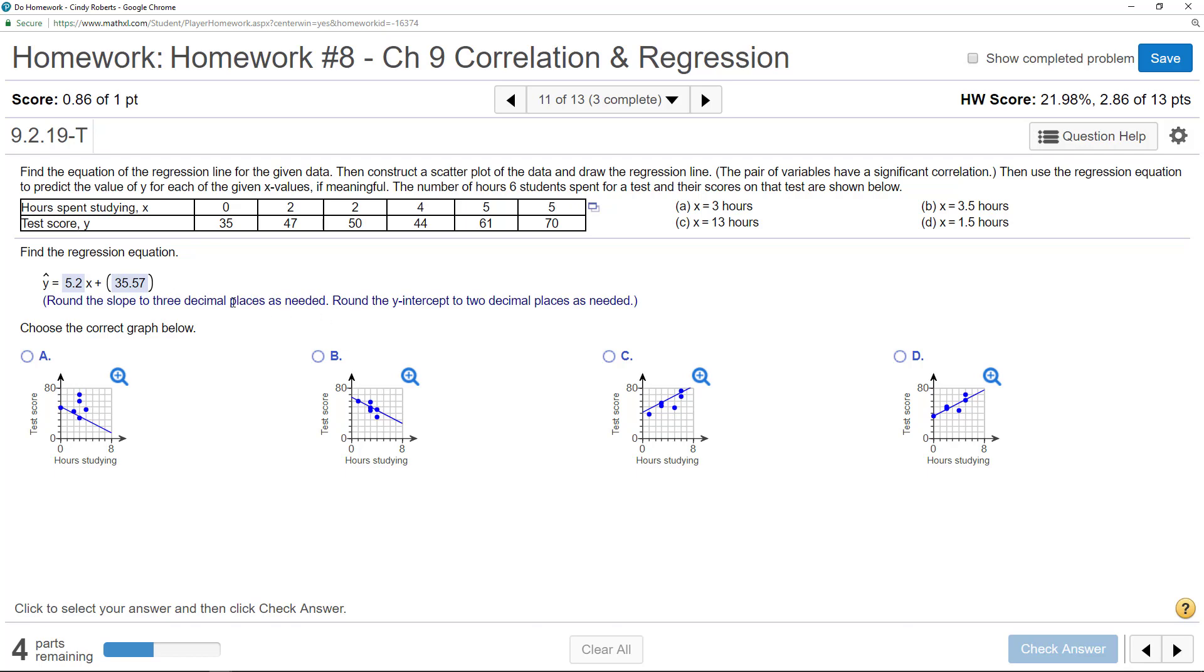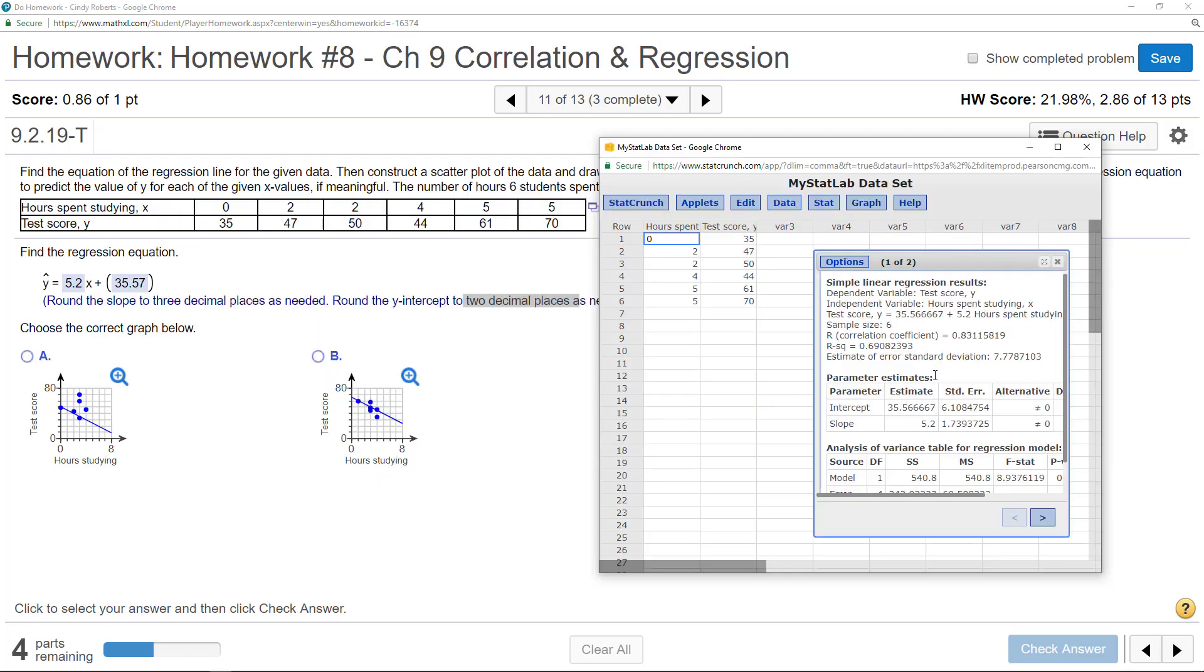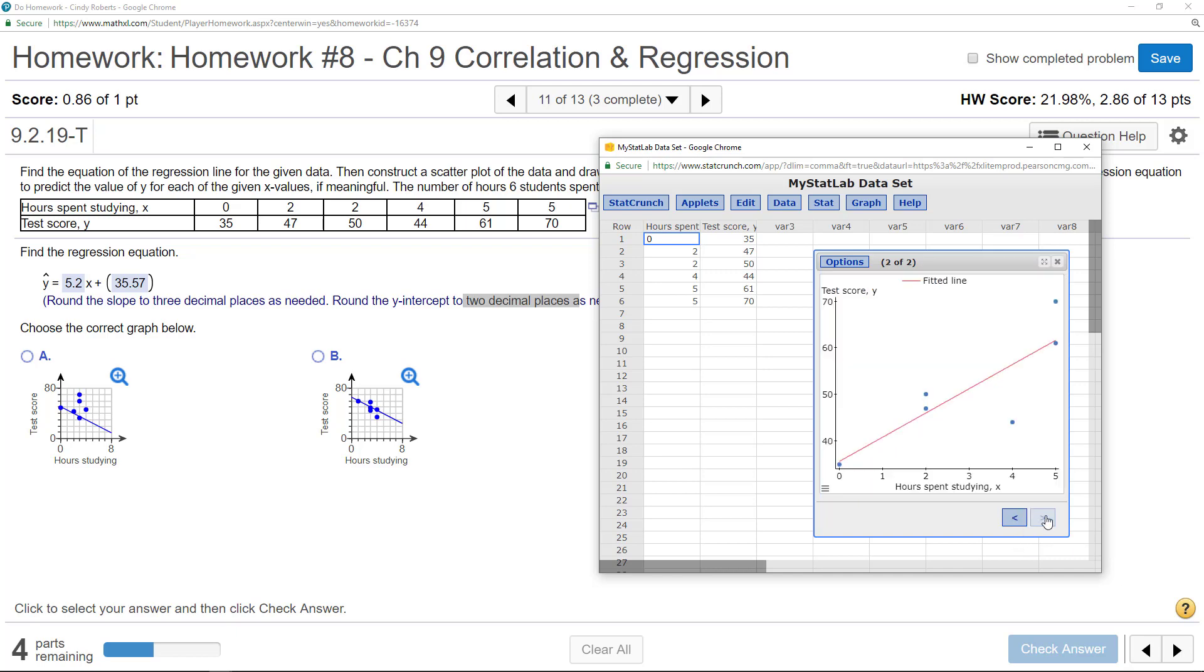Round the slope to three decimal places as needed. Round the y-intercept to two decimal places. So if you don't read like me, you'll get that wrong. All right, so let's go look at my graph.